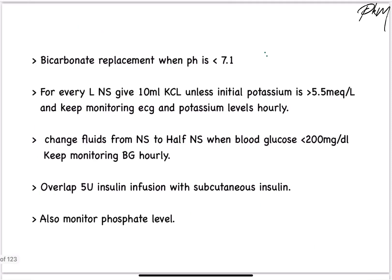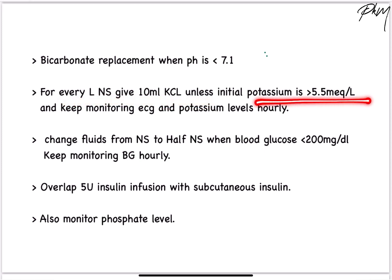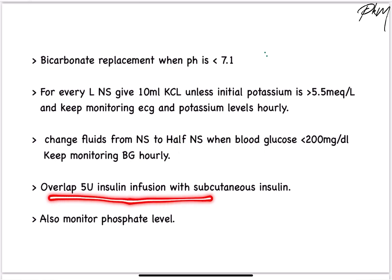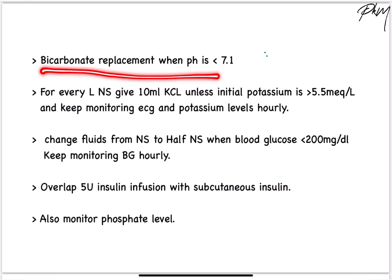Some other points to note: for every 1 litre of NS, give 10 mL of KCl, which is equivalent to 1 ampoule, unless the initial potassium level is greater than 5.5 mEq per litre. Keep monitoring ECG for potassium levels. Once blood glucose level comes down to less than 200 mg per deciliter, change NS to half NS or 5% dextrose, and overlap the 5 units of insulin infusion with subcutaneous insulin. Bicarbonate replacement is usually not given; it is given only if the pH is less than 7.1.